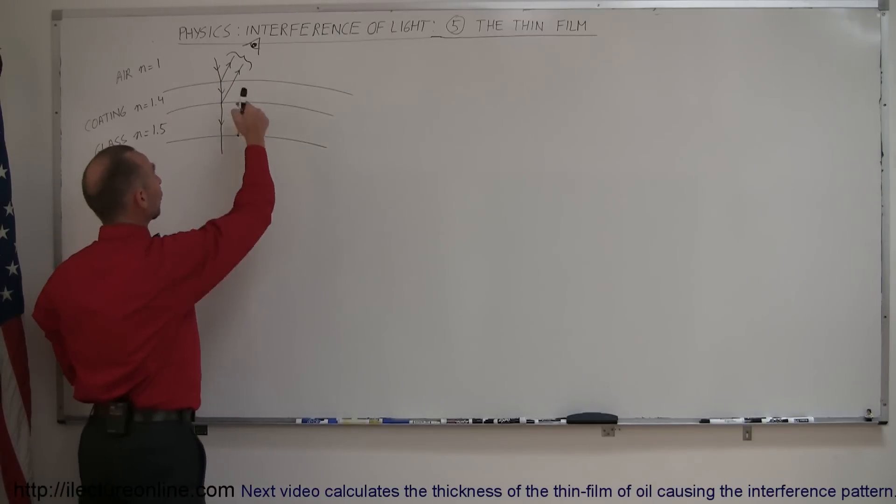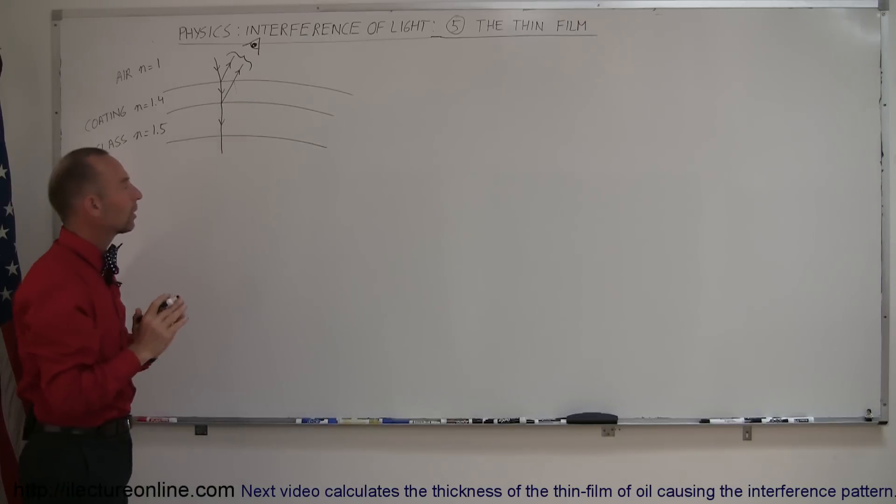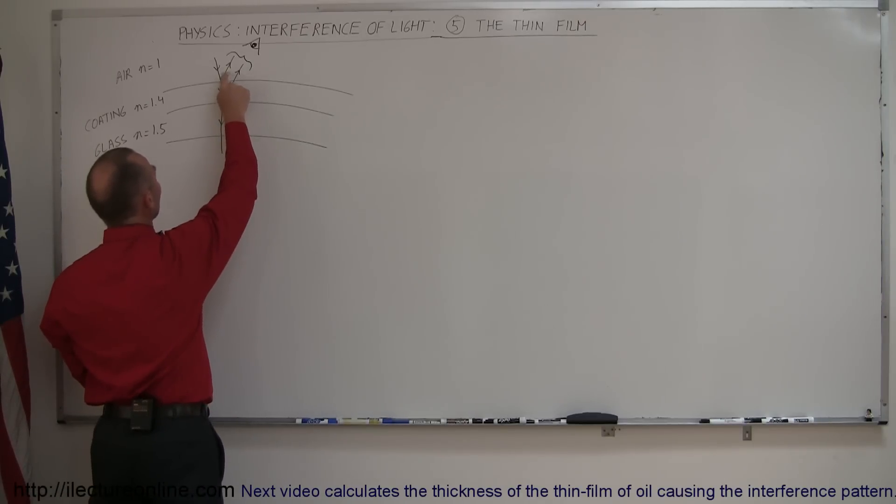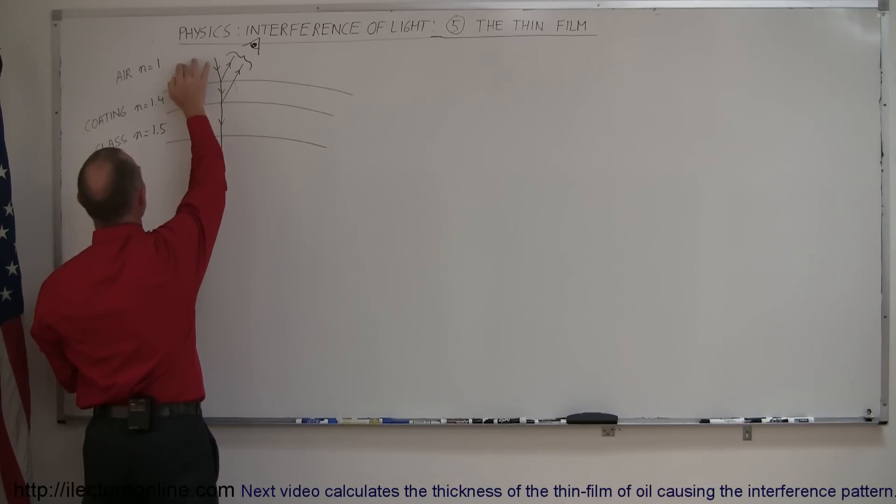And to be honest, of course, at this point, some of the light will also be reflected again, but we're going to ignore that portion of it. We're going to take a look at the reflected light of the top of the boundary here, of the first boundary between the air and the coating.